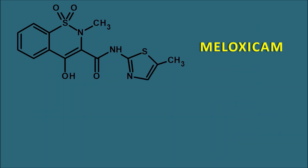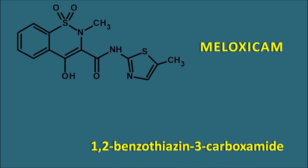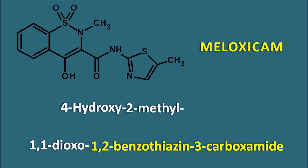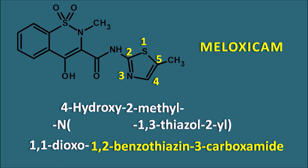The next drug is meloxicam. Meloxicam has a similar structure, so again it is 1,2-benzothiazine-3-carboxamide with 4-hydroxy, 2-methyl, and 1,1-dioxo. The difference is the group on the nitrogen of the amide — instead of pyridine it is a thiazole ring. Numbering from sulfur: 1-2-3-4-5, the thiazole is attached at the second position — N-(1,3-thiazol-2-yl). This thiazole ring has a methyl group at the fifth position — 5-methyl. So the full name of meloxicam includes N-(5-methylthiazol-2-yl).